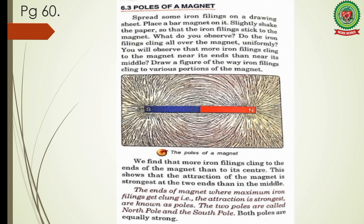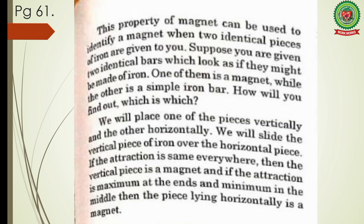The ends of the magnet where maximum iron filings get clung — where attraction is strongest — are known as poles. The two poles are called the north pole and the south pole, and both poles are equally strong. This property can be used to identify a magnet from iron: place one piece vertically and the other horizontally and slide. If attraction is the same everywhere, the vertical piece is a magnet; if attraction is maximum at the ends and minimum in the middle, the horizontal piece is the magnet.